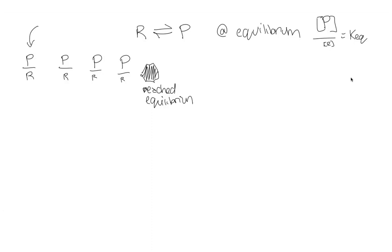Basically, at any point we can calculate that ratio and call it Q. Once our Q equals our KEQ, there's no drive — we've reached equilibrium. Over here we had a strong drive to the right, but then we went to the right, started making more products, until eventually we got to that point where we had enough products that we were at equilibrium. Our ratio of products to reactants was at equilibrium, there was no drive to move. That's what happens at equilibrium: your Q equals your KEQ, there's no further drive.